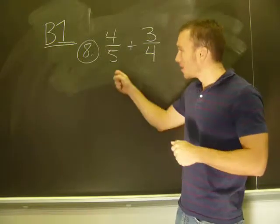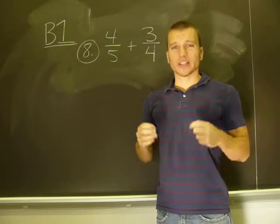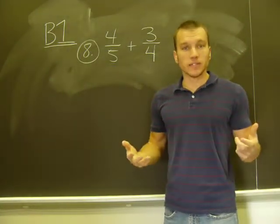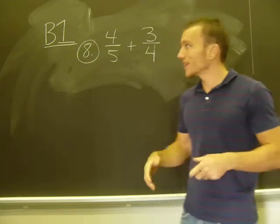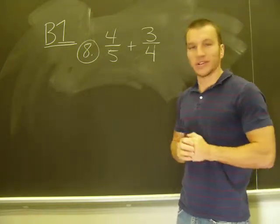So how we find the common denominator. In this case the denominators are 5 and 4, so I need a number, the smallest number that 5 and 4 will both divide into evenly. In this case it's going to be 20. 20 is the smallest number that 5 and 4 go into evenly.